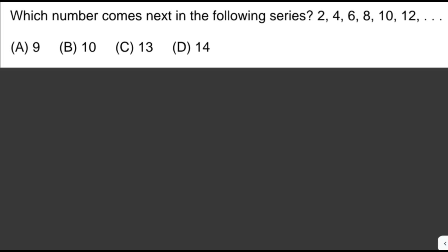Which number comes next in the following series: 2, 4, 6, 8, 10, 12? The common difference is two — found by subtracting consecutive terms. We just add two to twelve, so the next number is fourteen. The answer is letter D.